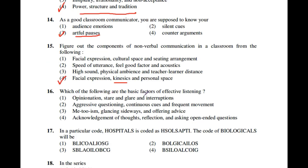Question number 16: Which of the following are the basic factors of effective listening? The options include questioning, opinionation, stare and glare; interruptions, aggressive questioning, continuous cues and fragment movement; glancing sideways and offering advice; or acknowledgement of thoughts, reflection and asking open-ended questions. The correct option is the fourth one — acknowledgement of thoughts, reflection and asking open-ended questions.